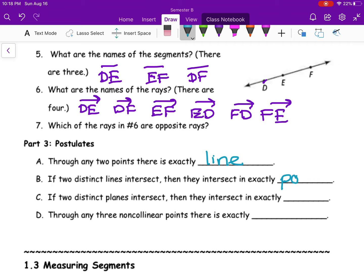If two distinct lines intersect, then they intersect in exactly one point. So if you think about that, if I have a line and another line, they're going to cross at a point.